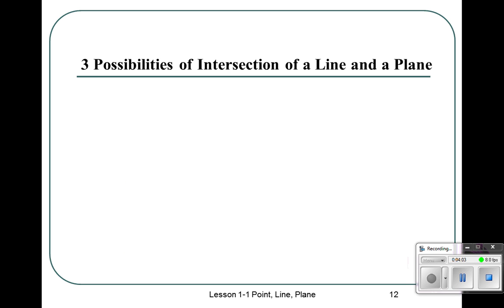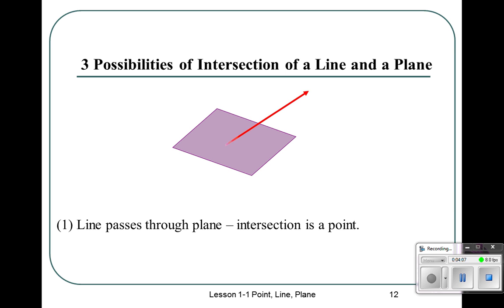All right, a line and a plane. The line can pass through the plane. The intersection is a point.